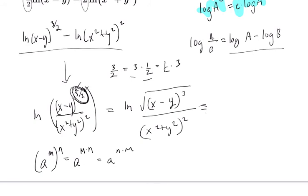So in this case, we have x minus y raised to the 3 halves. So you can think of that as x minus y cubed to the half, and then you could reverse it as x minus y to the half cubed.